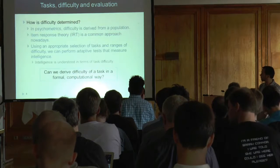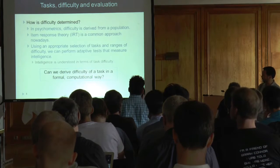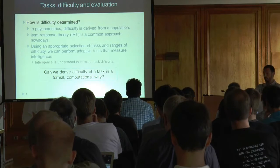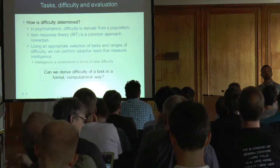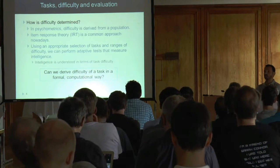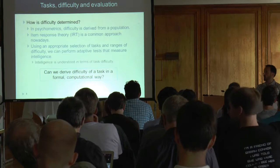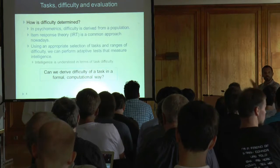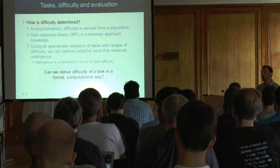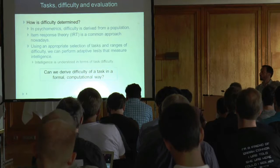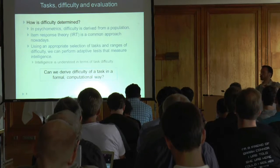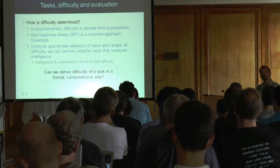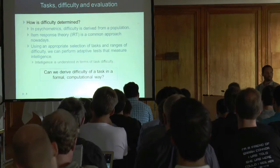One good thing about psychometrics is that they have humans: they infer difficulties from a human population by taking a task, evaluating it on a standardized population, and getting how difficult each instance is. We could take an anthropocentric approach and just borrow the difficulty function from humans. But instead, we can ask: can we define a notion of difficulty that is not anthropocentric?